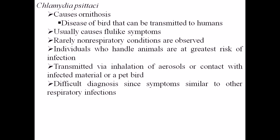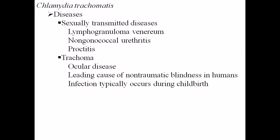One species of Chlamydia is Chlamydia psittaci, which causes ornithosis — a typical disease of birds that can also be transmitted to humans. Ornithosis is important pathogenically because it causes flu-like symptoms. A major concern is that Chlamydia infections most of the time produce almost no symptoms or very limited symptoms, making it difficult to distinguish from other bacteria. This leads to misidentification, wrong treatment, and the disease becoming harder to control.